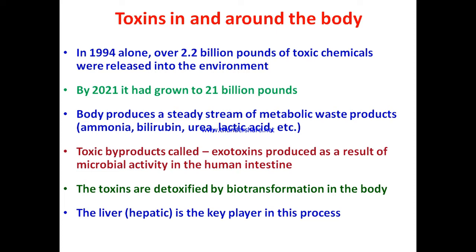Some of these chemicals enter our body through various routes like the mouth, alimentary canal, lungs, skin, and eyes. Our body also produces a lot of metabolic waste products every day like ammonia, bilirubin, urea, and lactic acid. In addition, bacteria living in our digestive system produce waste products that are toxic to our body — these toxic byproducts are called exotoxins.